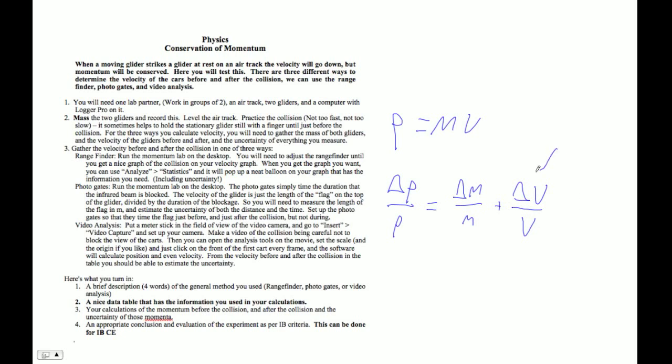So for these uncertainties of the velocity, we'll be able to go in and use logger pro and just go max minus min over 2. For the uncertainty of the mass, it'll just be half of the smallest unit. So if you can measure, if it's 329.35 grams, your uncertainty is ridiculously small.